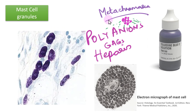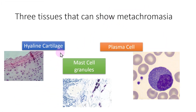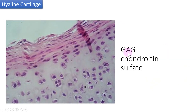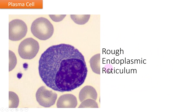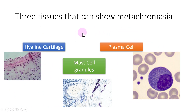The other tissues that show metachromasia are hyaline cartilage, which contains glycosaminoglycans — specifically chondroitin sulfate — as the polyanion that creates metachromasia. And if you look at the plasma cell, it contains a lot of rough endoplasmic reticulum which is again highly anionic, because rough endoplasmic reticulum contains a lot of ribosomal RNA which is also anionic. These are the three normal tissues that can show metachromasia. Thank you.